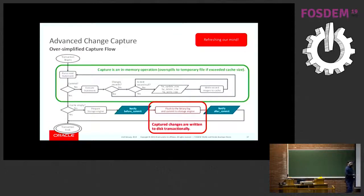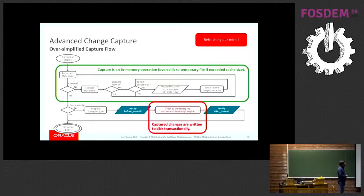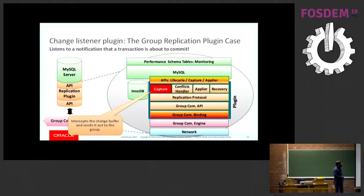So advanced change data capture. Coming back to this interesting diagram here. We capture the changes while the transaction is executing. Once the transaction is about to commit, we notify that it's going to be committed, and then we flush these changes to the bin log, and then we notify that these changes have been flushed and committed in the bin log in the storage engine locally. So let's have a look at the group replication use case.